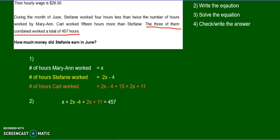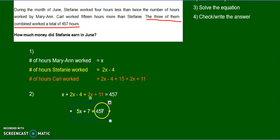Now we solve the equation. I put my x's together. x plus 2x plus 2x, that's 5x. Negative 4 plus 11, that's plus 7. Equals 457.